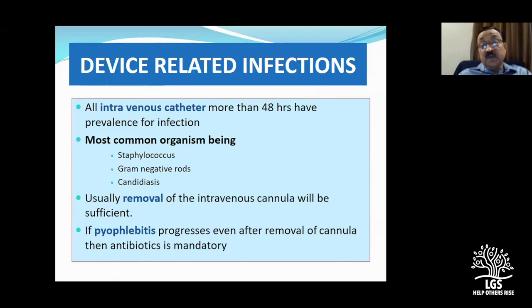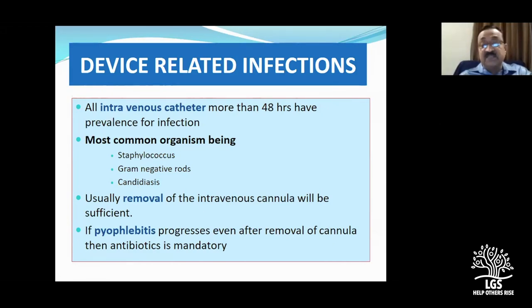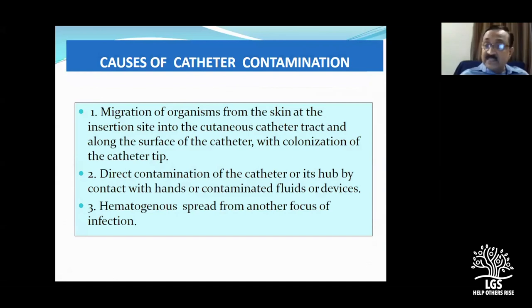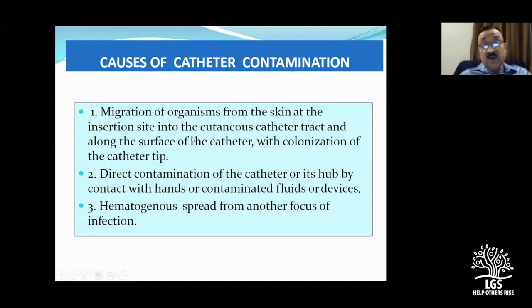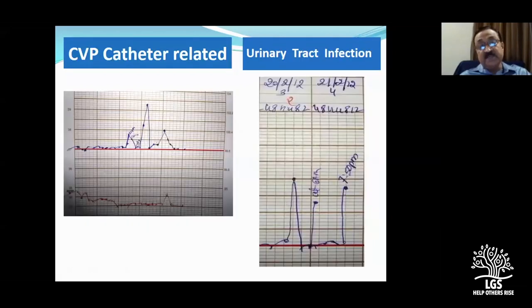Pyophlebitis — pus inside the vein — requires mandatory antibiotics. Don't confuse pyophlebitis with pylephlebitis, which is infection of the portal vein and its radicals. The mechanism of catheter-related infection involves organism migration from skin to catheter tip, direct contact contamination, contaminated fluids or devices, or even hematogenous spread. Removing the catheter often stops the catheter-related fever — this is illustrated clearly on temperature charts.